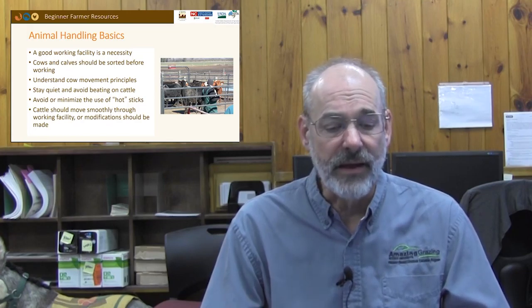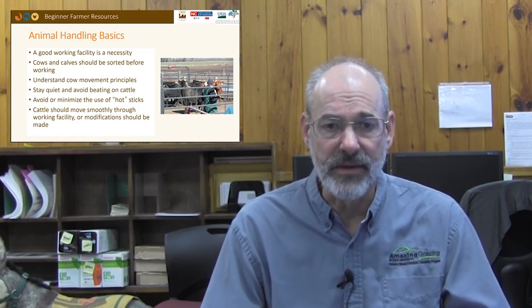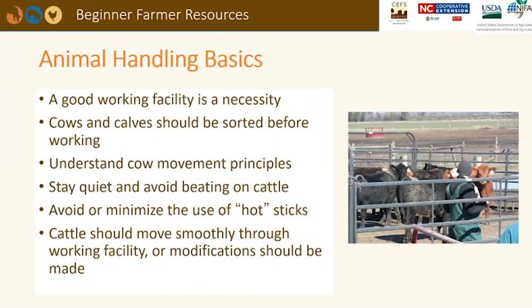A hotshot is an electrical prod that may be useful in rare situations in the chute, but it should be at a bare minimum. On my own farm, we do not own a hotshot — people who come to help might grab it and start using it, and I don't want that. When working cattle through a chute to give them a shot, it should be very smooth and easy. If you have problems, there's a reason for it — go back and analyze your system, look for something like a dangling chain that's distracting the animals.